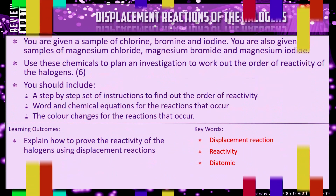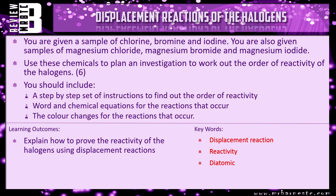There is a review question: you are given samples of chlorine, bromine and iodine, and also magnesium chloride, magnesium bromide and magnesium iodide. Use these chemicals to plan an investigation to work out the order of reactivity of the halogens. You should include a step-by-step set of instructions, word and chemical equations for the reactions that occur, and the colour changes for the reactions that occur. This is exactly what we've been through in this video, so look back if you're not sure. That brings this video to an end.